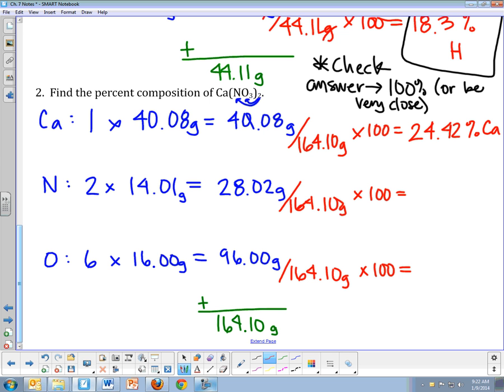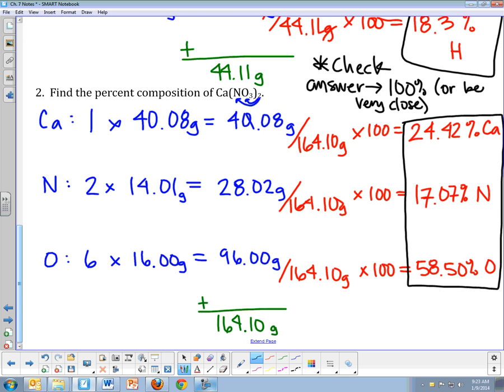Nitrogen. So 28.02 divided by 164.10 times 100. I get 17.07%. So even though there's more nitrogen than there is calcium, the percent of calcium is higher because calcium weighs more. And then oxygen. I have mostly more oxygens than anything else. So when I do this calculation, I get 58.50%. So that's why that's the highest percent. A little bit over half of my molecule is oxygen. So in terms of your answer, it's all three of these percents. So that's how to calculate percent composition.